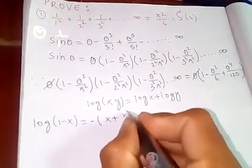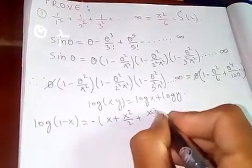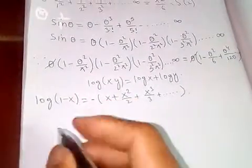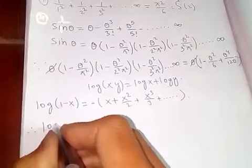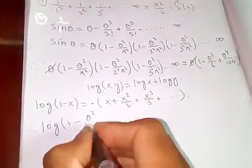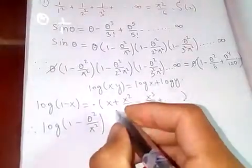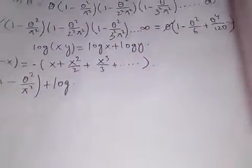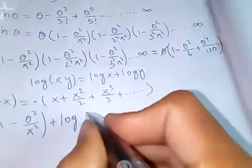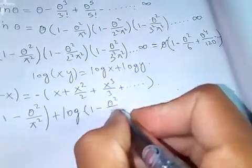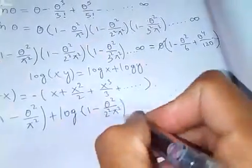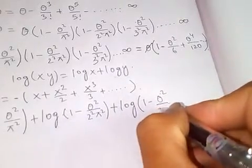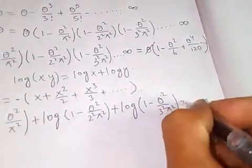And we use the series expansion: log(1 - x) = -x - x²/2 - x³/3 - and so on. Applying logarithm to the product gives: log(1 - θ²/π²) + log(1 - θ²/2²π²) + log(1 - θ²/3²π²) + and so on.